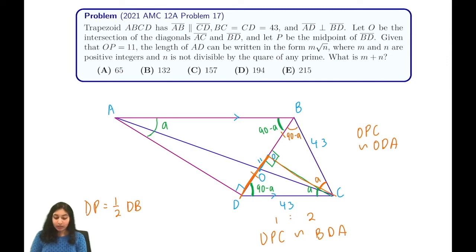So in triangle DPC, our hypotenuse is 43. And in triangle BDA, it's going to be double that, so 86.